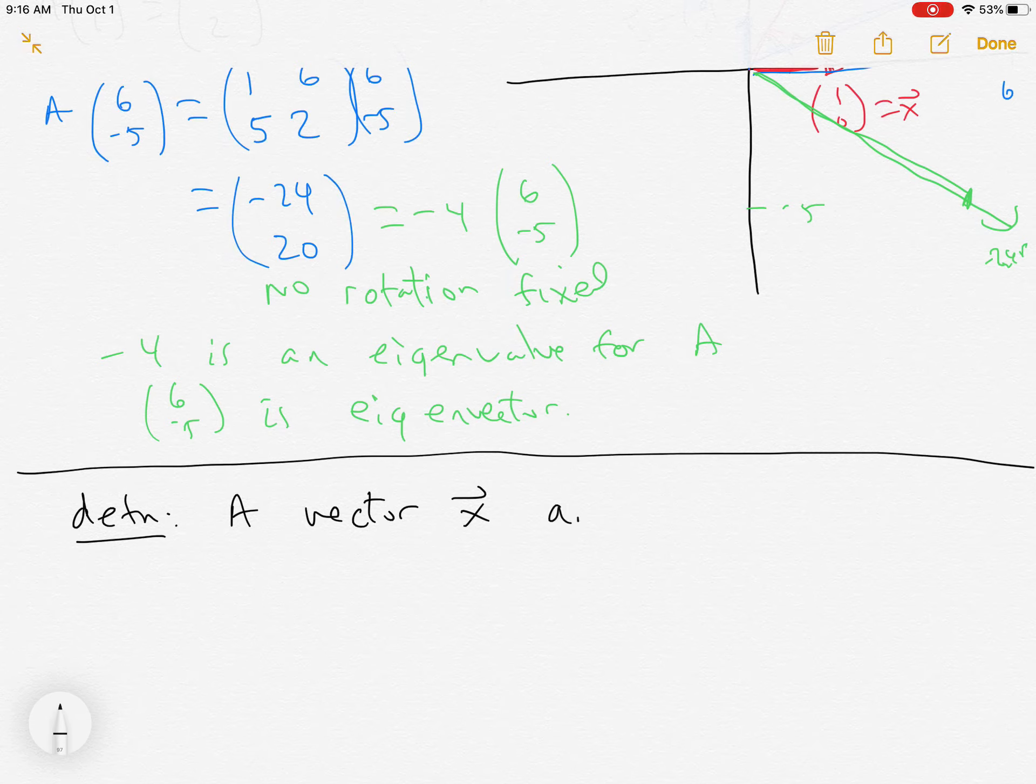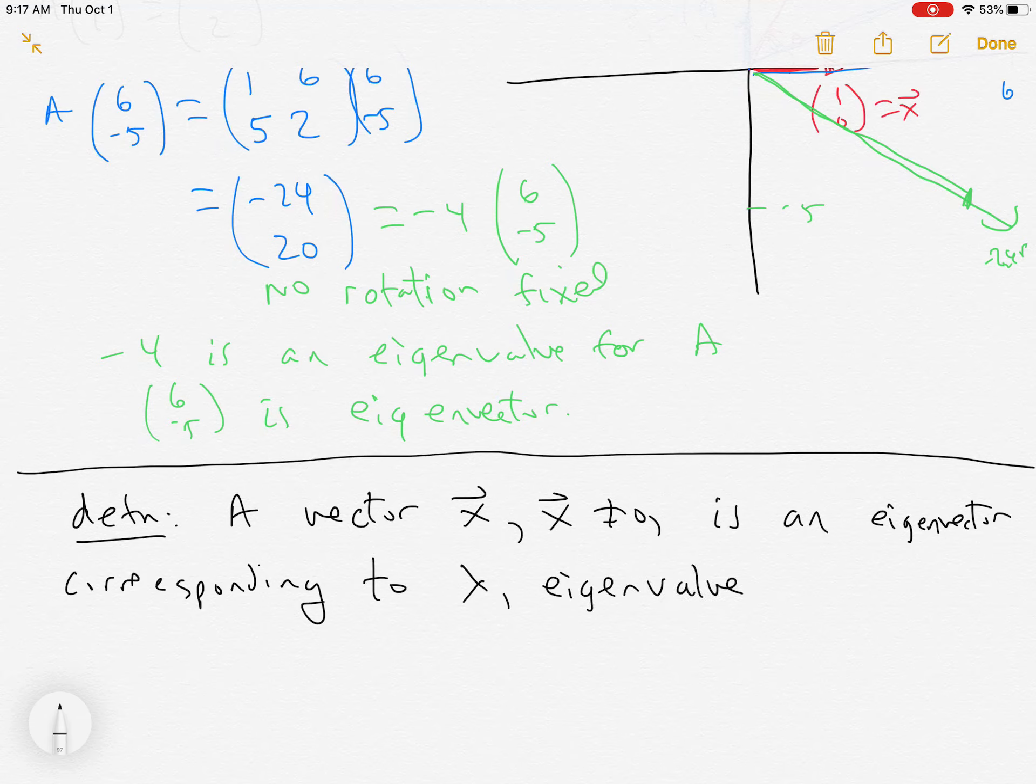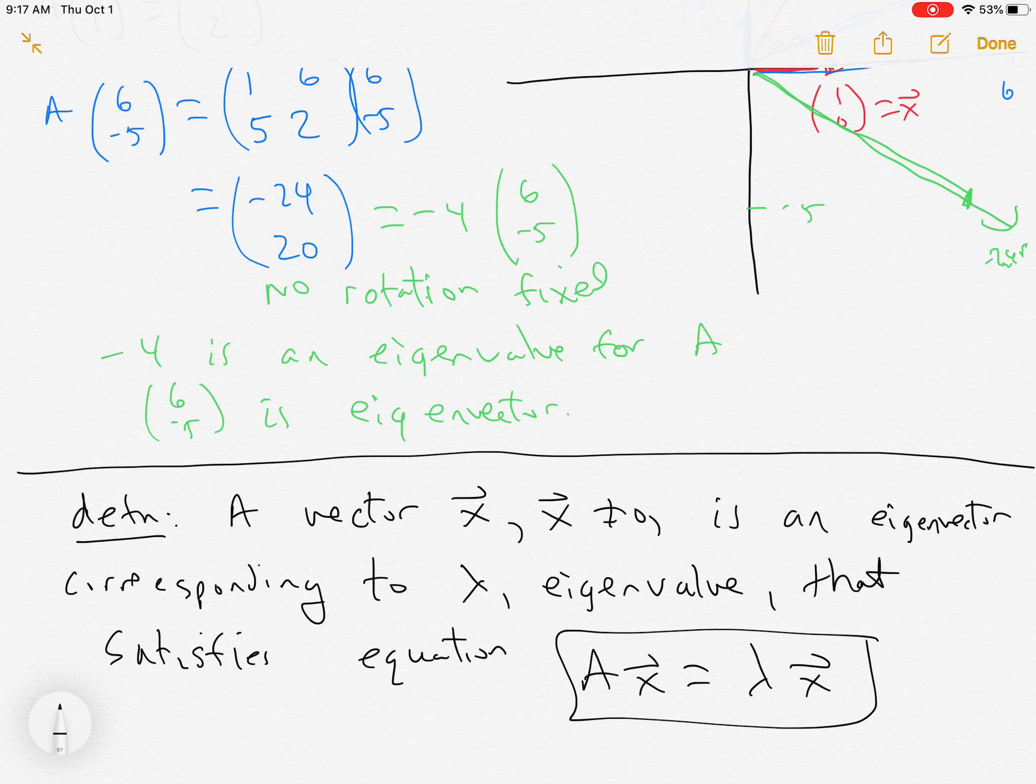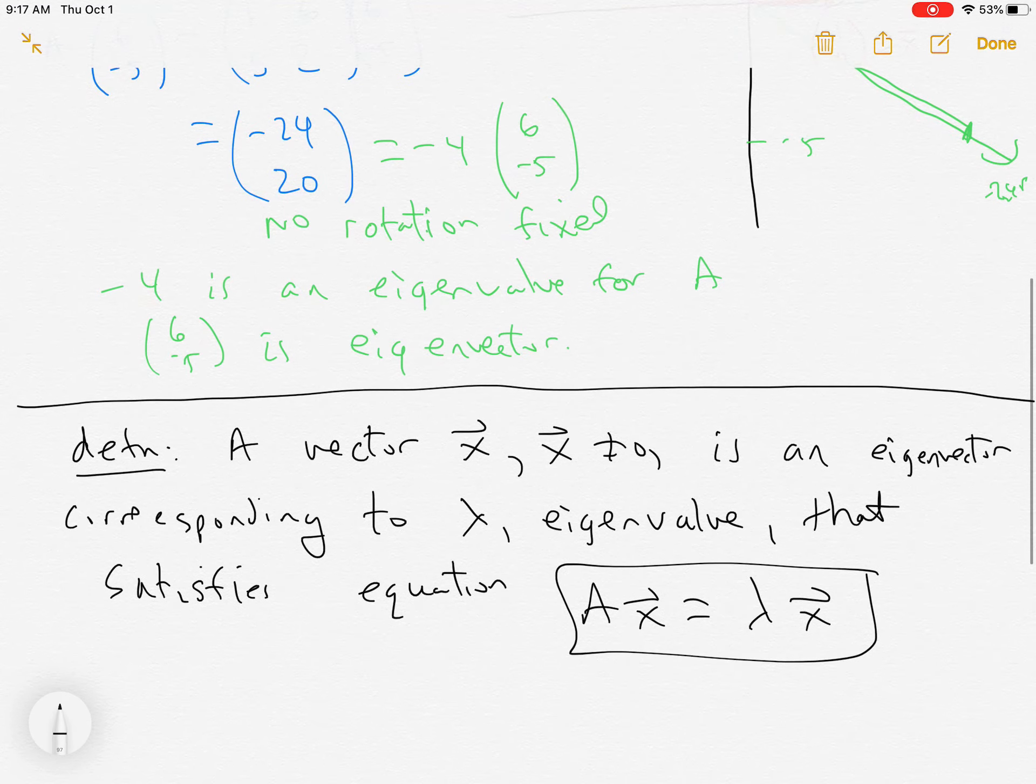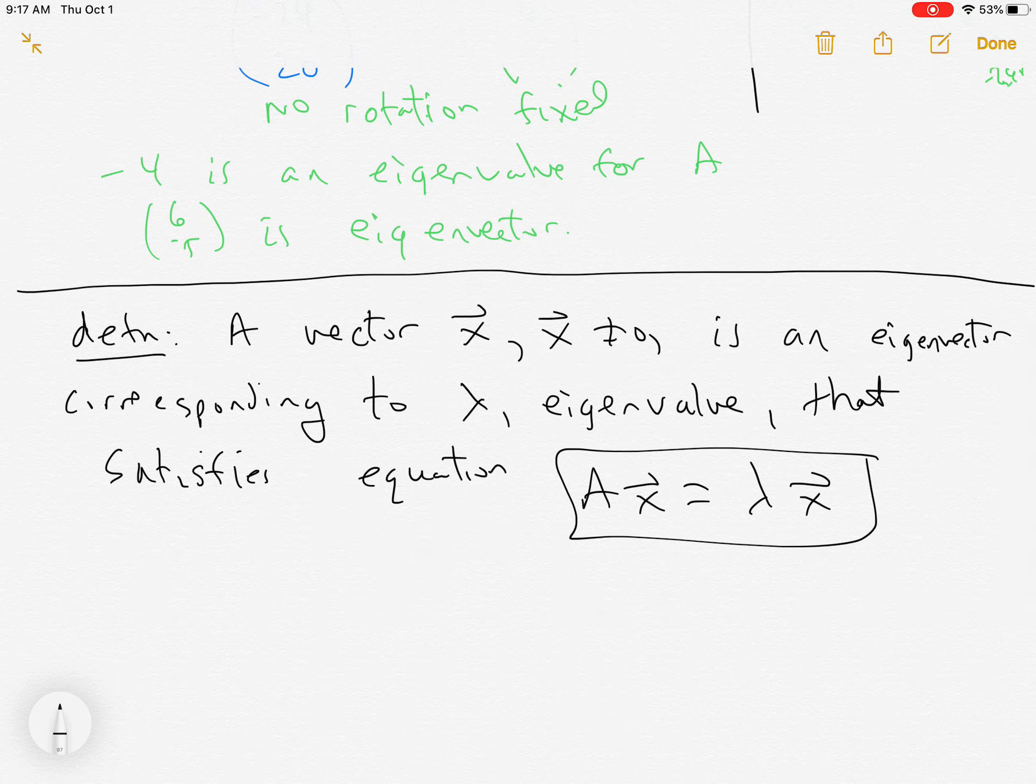Here's a more formal definition. A non-zero vector x is an eigenvector corresponding to a number lambda called the eigenvalue that satisfies the equation Ax = λx. This is the major equation there. So from before, what we said was here, this is eigenvalue and eigenvector.